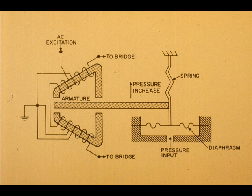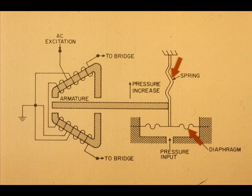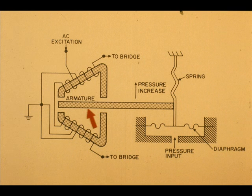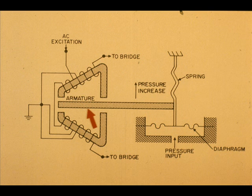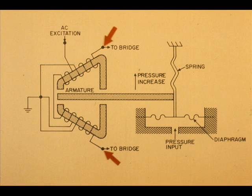This is a schematic of the measuring cell. A change in pressure causes the diaphragm to move against the spring. This moves the ferrite armature, which decreases the air gap between the armature and one transformer, and increases the air gap in the other.